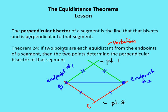Okay, so let's talk about theorem 24. It says that if two points are each equidistant from the endpoints of a segment, then those two points determine the perpendicular bisector of that segment.